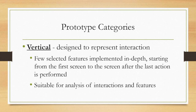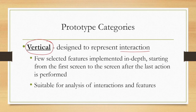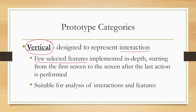There is another category called vertical prototypes. As opposed to horizontal prototypes, vertical prototypes are designed to represent interaction. Horizontal prototypes are primarily for interfaces, whereas vertical prototypes are primarily for interaction. Since interaction is represented, it can also represent interfaces — so it can represent both. However, that does not mean we implement every functionality; instead, a few selected features are implemented in depth from start to end point.